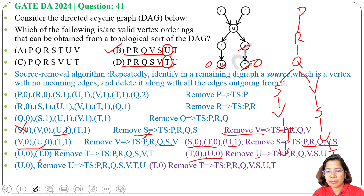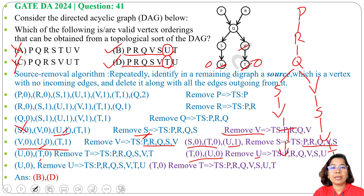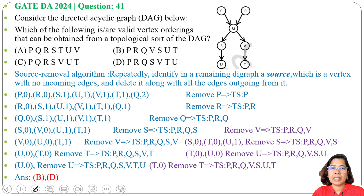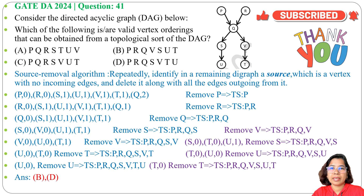Both sequences match options B and D respectively. So the answer is option B and option D. In the source removal method, we write vertices in increasing order of in-degree and every time remove a vertex whose in-degree is zero along with all its outgoing edges, repeating until no vertices remain. Both DFS and source removal methods are useful — you need to check which is applicable. Please like, share, and subscribe if this was helpful.